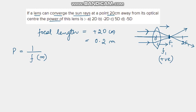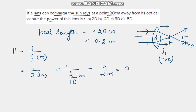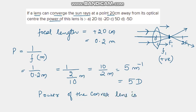Power equals 1 divided by f in meters, which is 1 divided by 0.2 meters. That equals 1 divided by (2/10), which equals 10/2, which is 5 meter inverse. Meter inverse is known as diopter. So the power of this convex lens is plus 5 diopter. I hope it's clear. Thanks for watching.